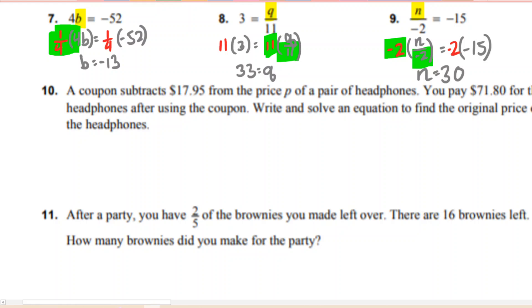Now there are a few more here. We should take a look at number 10. A coupon subtracts $17.95 from the price of P. So we take P and we subtract from that $17.95. And then you end up paying $71.80 for the headphones. So this is going to force us to use our calculator here. Read the problem. It says write and solve an equation. So if you're doing this on a test, that means you're going to get points for simply writing the equation, not just solving the equation, but also writing the equation. That's an important part of this. And I've got to tell you, once you move to your high school exit exam, just writing the equation is as many points as getting the correct answer at the end.